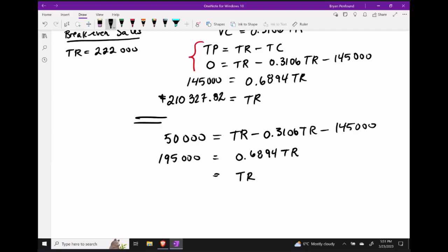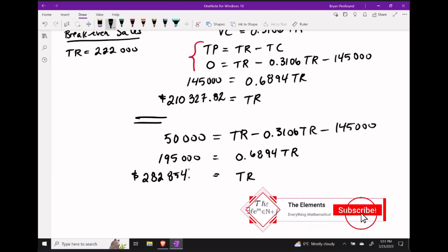And dividing both sides by 0.6894 gives us that the revenue we need to bring in in order to make a $50,000 profit is going to be around $282,854.66.